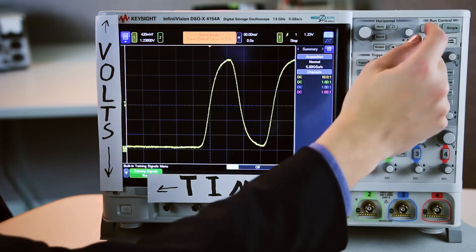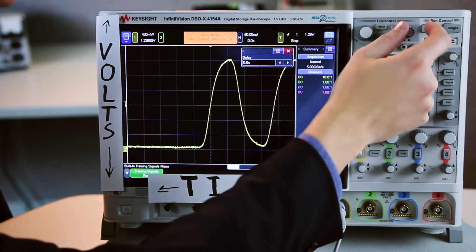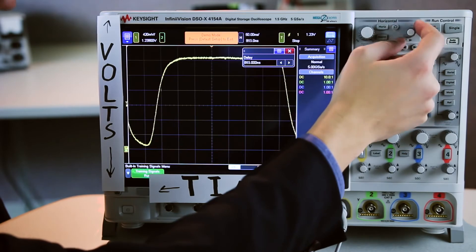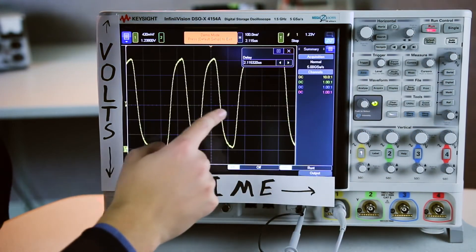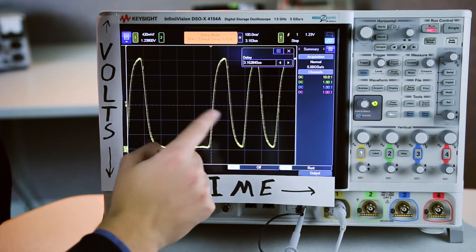We can use this other knob up in the horizontal section. We can actually scroll through our waveform and if you're extra lucky and your scope has a touchscreen you can actually just use the touchscreen to swipe through and look at your whole signal all the time.